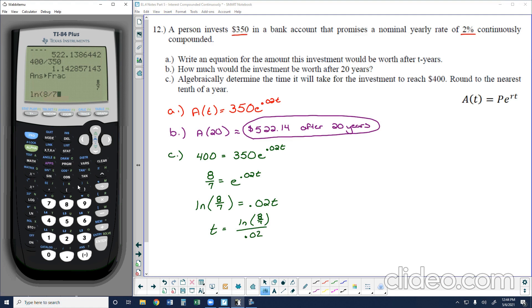And as I input that into my calculator, I can get the approximate value. So it would take approximately, I'll go ahead and round it to two decimals, even though directions did say to the tenths place. Let's round it to the hundredths. It would take approximately 6.68 years to reach a $400 value.